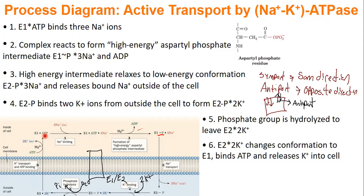Now in the high-energy E2·2K form, we can release the two potassiums inside the cell — potassium has been transported from outside to inside. Then ATP will bind and we return to E1·ATP. So this mechanism shows us how we transport sodium and potassium — not at the same time, but sequentially: sodium out first, then potassium in. E1 interacts with sodium, E2 interacts with potassium, and the energy comes from ATP hydrolysis.